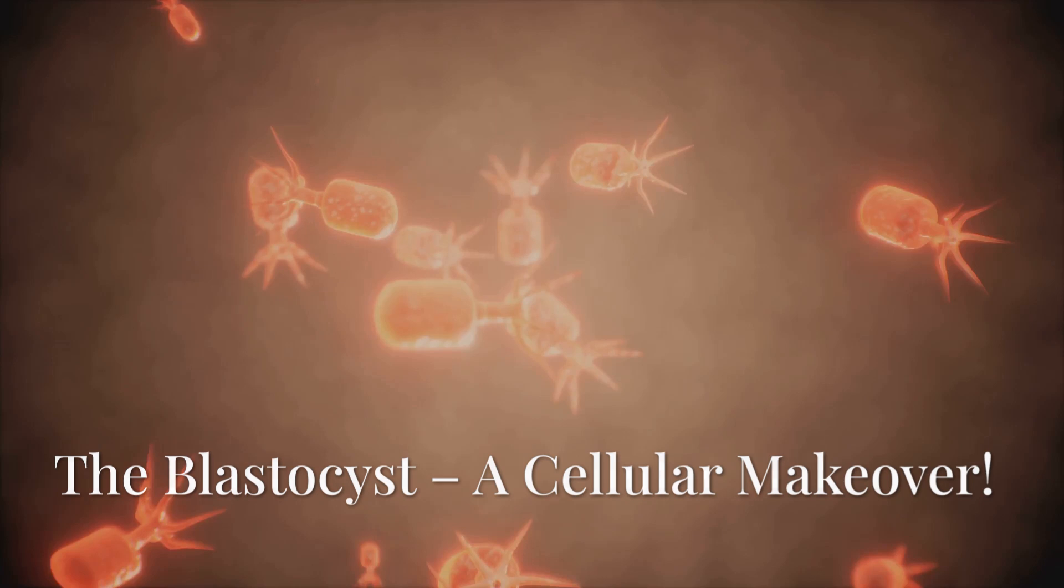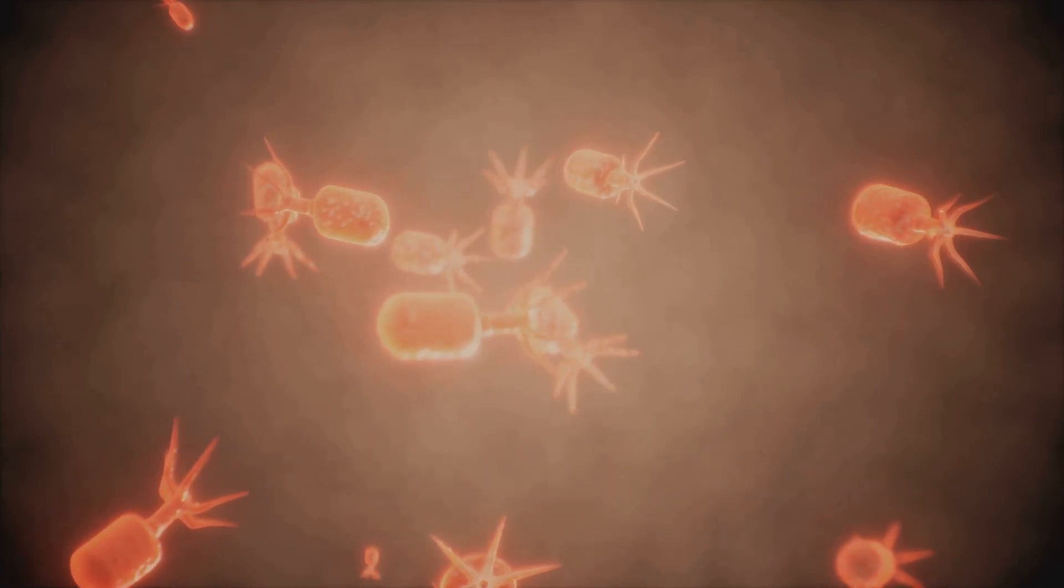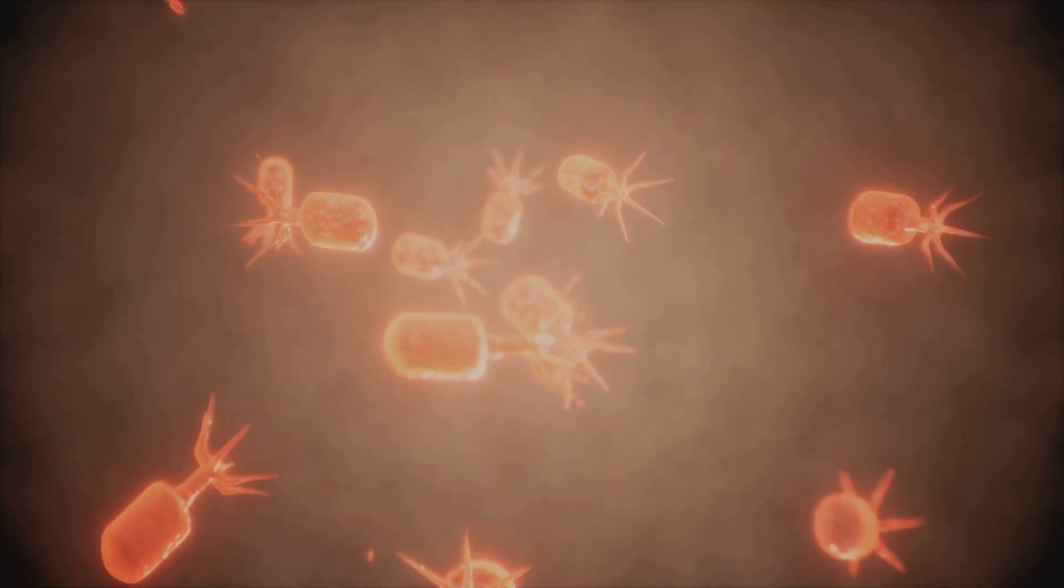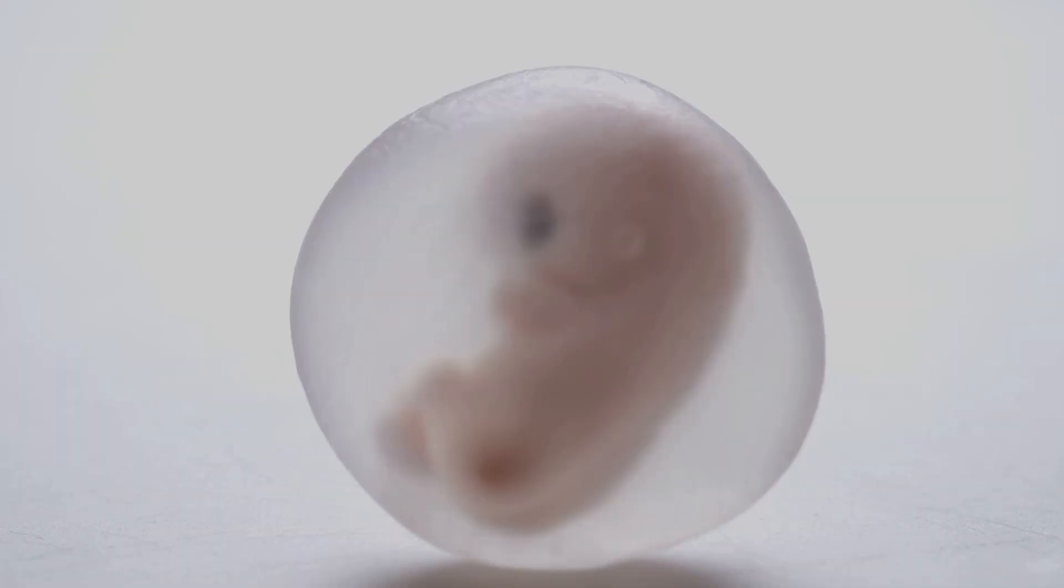All right, fast forward to day five and things are about to get even more wild. Our little morula, that cluster of cells, decides it's time for a major makeover. The cells in the morula start reorganizing like they're forming a tiny society and they transform into something called a blastocyst.